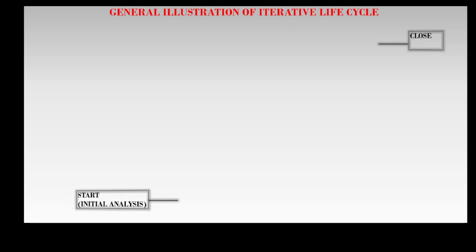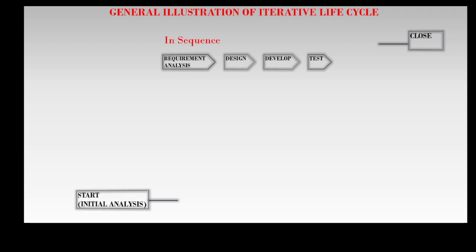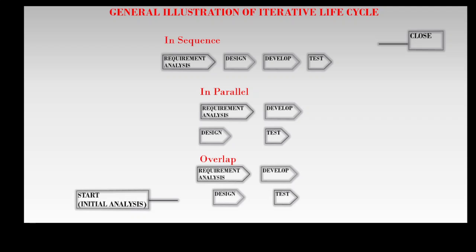In this general illustration, between the start and the close phases of a project there are several small cycles. The phases from requirement analysis to test are repeated in each cycle and could occur in sequence, in parallel, or overlap. Delivery is done in the last cycle. We will use sequential phases in this illustration.